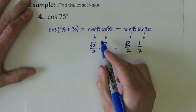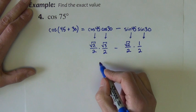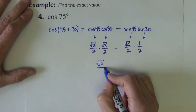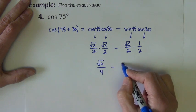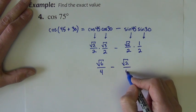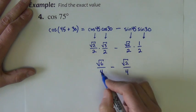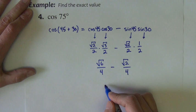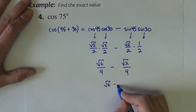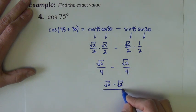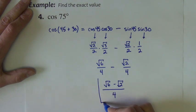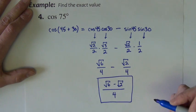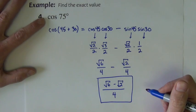And just like in the last problem, we're going to multiply each pair of fractions together. Square root of 6 over 4, minus square root of 2 over 4. And then we're going to subtract them together. Square root of 6 minus square root of 2 over 4. That's our exact value for cosine of 75 degrees.